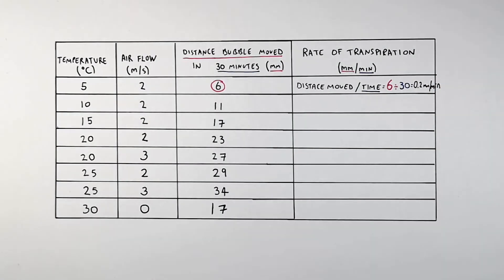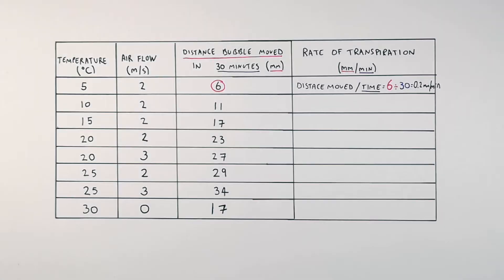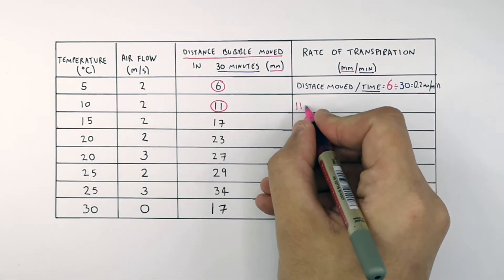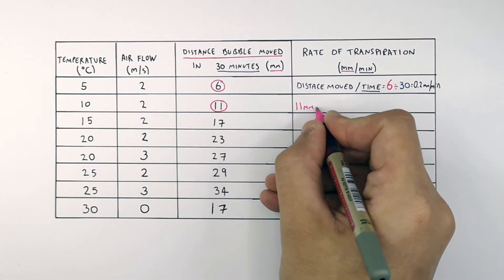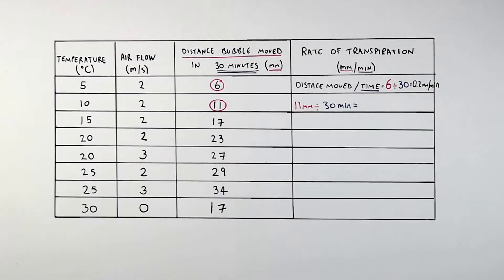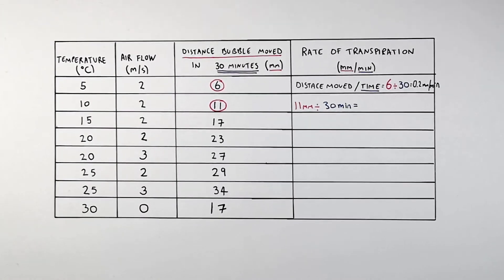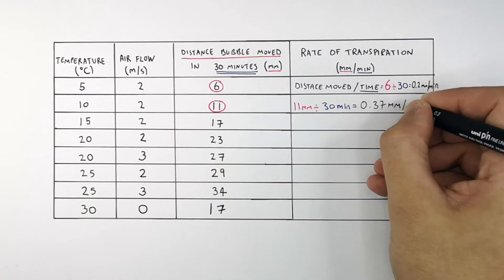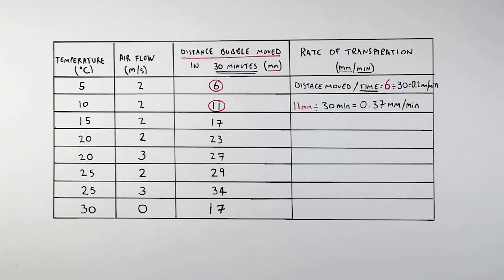At 10°C with an airflow of 2 meters per second, the bubble moved a distance of 11 millimeters. We divide 11 millimeters by the total time of 30 minutes. This gives a rate of transpiration of 0.37 millimeters per minute.